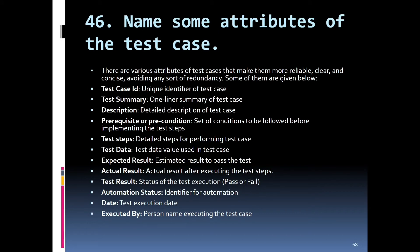The next question is: name some attributes of test cases. Attributes that make test cases clear and concise include: test case ID (unique identifier), test case summary (one-liner), description (full detailed description), pre-conditions (conditions to be met before executing), test steps, test data, expected result, actual result — always write expected first, then actual — test result, automation status, date, and executed by (name of the person).